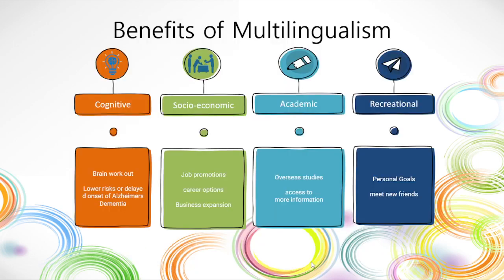The number one benefit of multilingualism is the brain workout. Imagine your brain multifunctioning — that is how neurons and synapses connect. Brain degenerative diseases such as Alzheimer's and dementia happen when the brain gets lazy and neurons stop connecting as much. When we speak multiple languages, there's a ton of activity going on in our brains, which gives a cognitive advantage, increases attention span, and improves problem-solving skills.